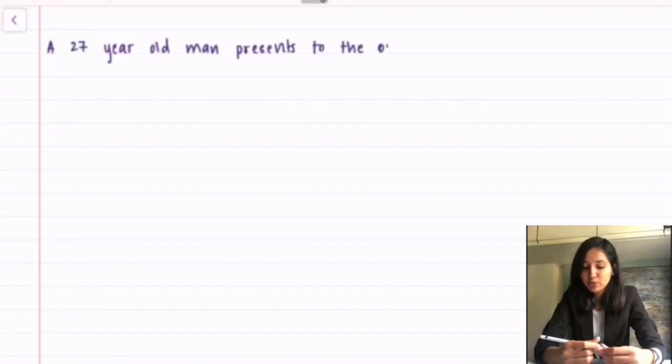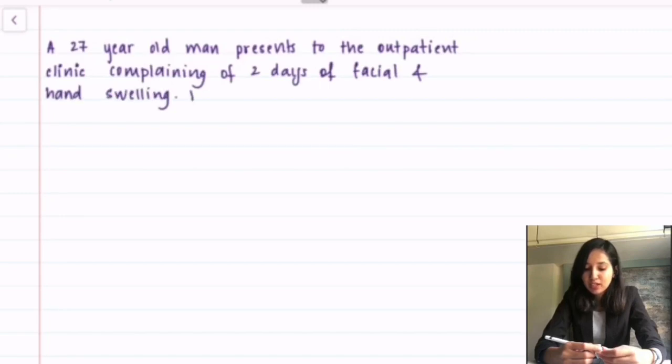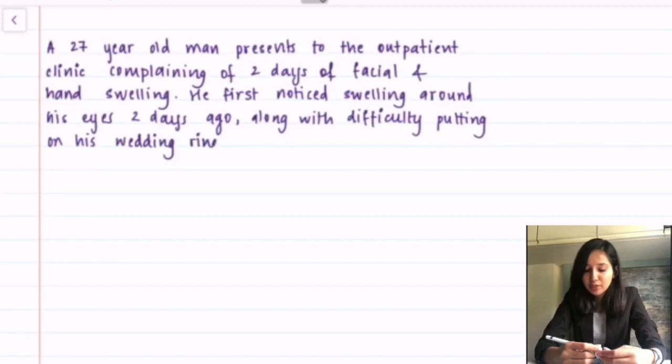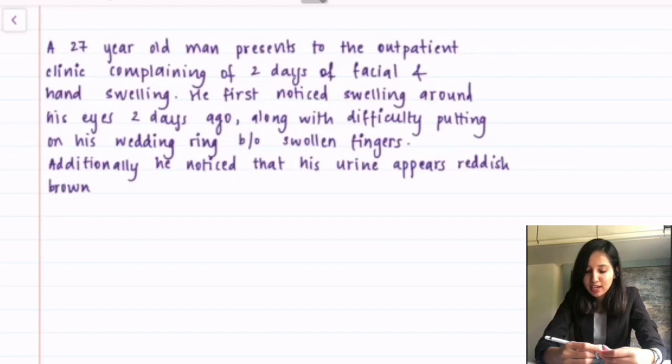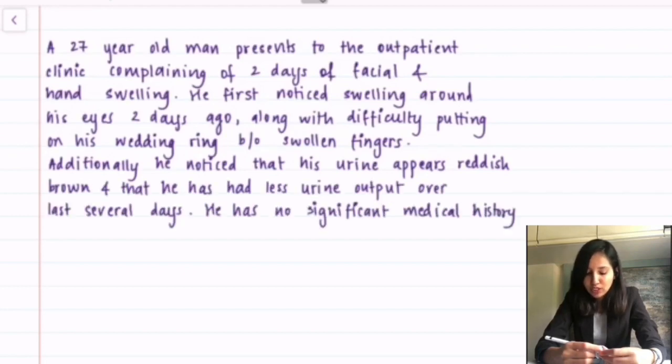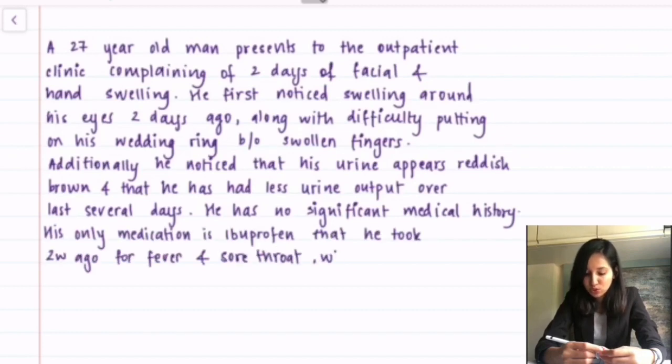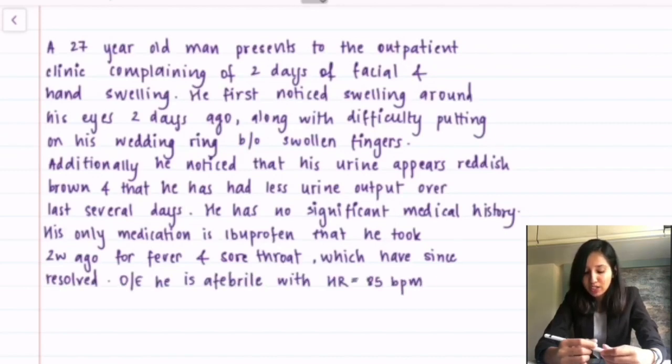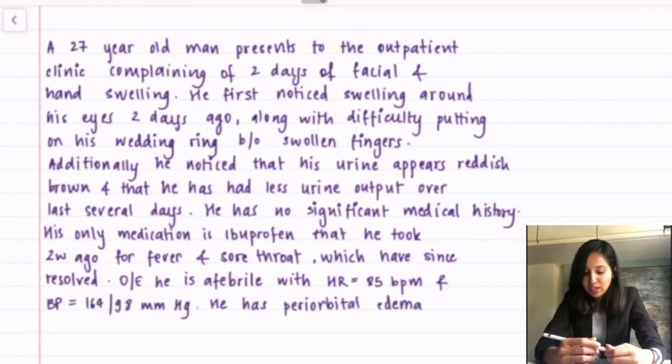A 27-year-old man presents to the outpatient clinic complaining of two days of facial and hand swelling. He first noticed swelling around his eyes two days ago, along with difficulty putting on his wedding ring because of swollen fingers. Additionally, he noticed that his urine appears reddish brown and that he has had less urine output over the last several days. He has no significant medical history. His only medication is ibuprofen that he took two weeks ago for fever and sore throat which have since resolved. On examination, he is afebrile with heart rate 85 beats per minute and blood pressure 164 over 98.